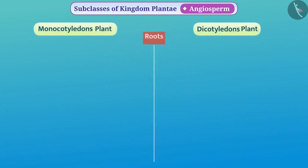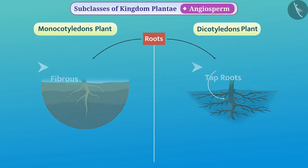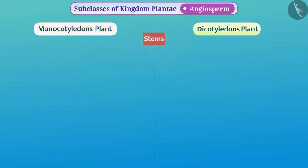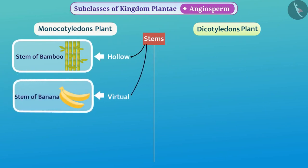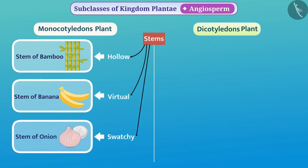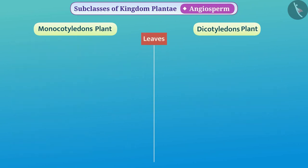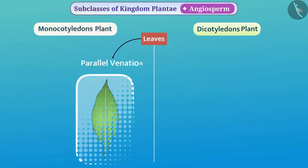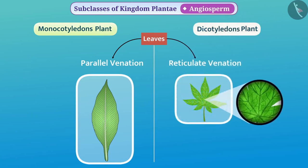Roots in monocot plants are usually fibrous, whereas in dicotyledon plants there are tap roots. In monocot plants, stems can be hollow such as bamboo, vertical such as banana, or storage-form such as onion, whereas the stem is strong and tough in dicotyledon plants. In case of leaves, the leaves in monocot plants have parallel venation, while the leaves in dicotyledon plants have reticulate venation.